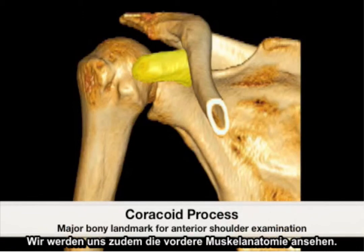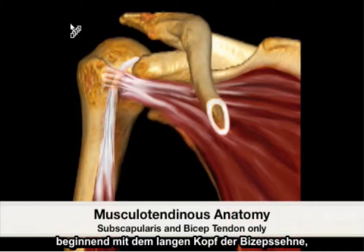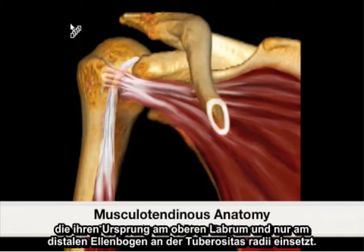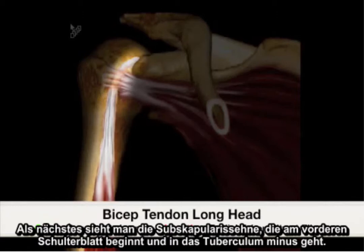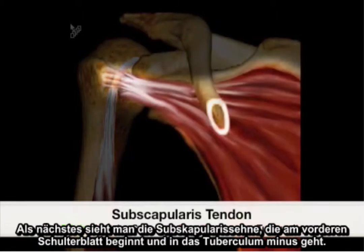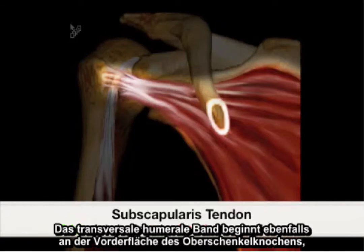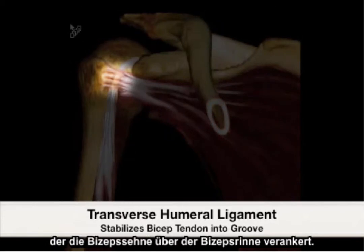We will also be reviewing the anterior musculotendinous anatomy, beginning with the biceps tendon long head, which originates at the superior labrum and inserts at the distal elbow at the radial tuberosity. Next is the subscapularis tendon, which originates at the anterior scapula and inserts to the lesser tuberosity. Also originating from the anterior surface of the subscapularis is the transverse humeral ligament, which anchors the bicep tendon in place over the bicipital groove.